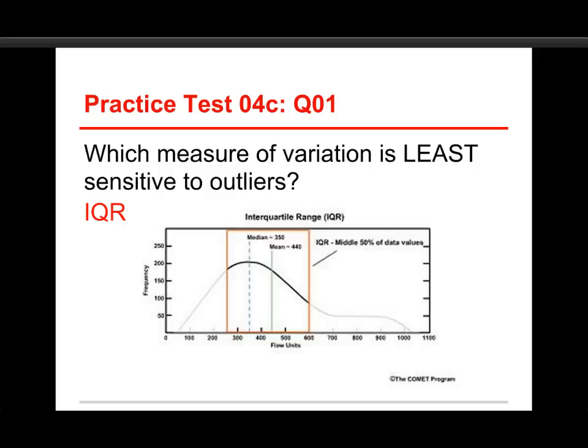That's one of the strengths of the interquartile range. On the other hand, as we saw before, the standard deviation and the variance can be dramatically affected, and the range is the most affected by outliers.